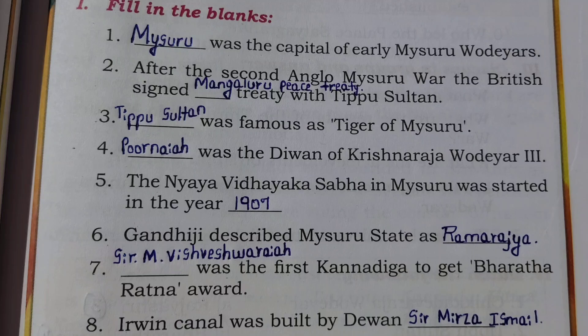Second question: After the Second Anglo-Mysore War, the British signed the Mangaluru Peace Treaty with Tipu Sultan. Third question: Tipu Sultan was famous as the Tiger of Mysore. Fourth question: Purnaya was the Divan of Krishna Raja Odayar the Third.